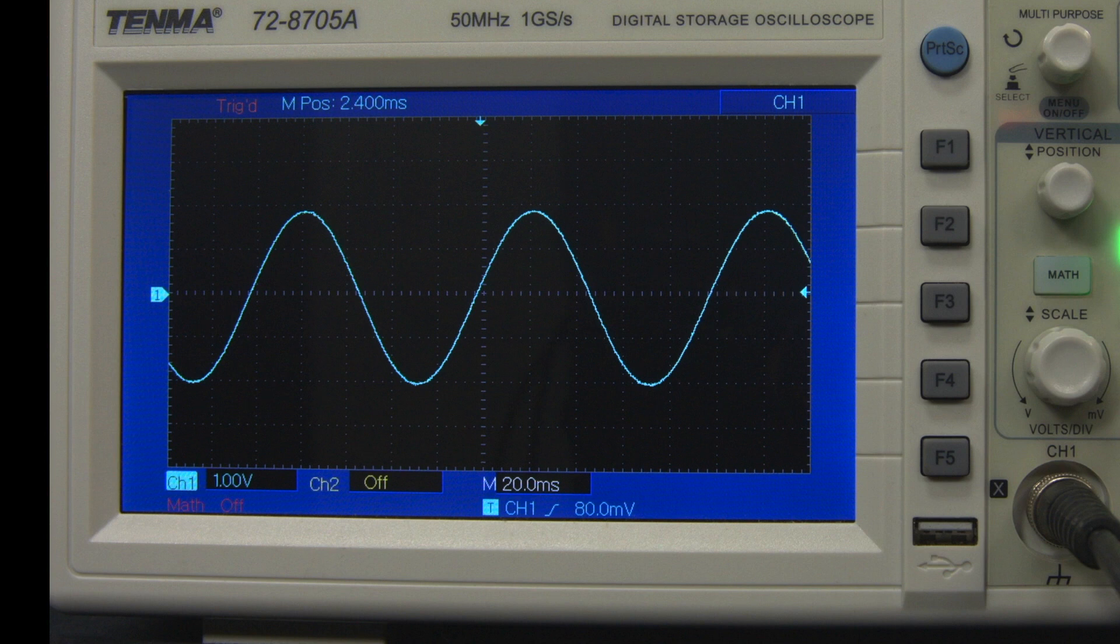The horizontal axis shows time. The main use of the oscilloscope is to show voltage as a function of time. The time scale or time base as it is called is shown next to the M at the bottom of the screen. In this case it is 20 milliseconds per division. From one voltage peak to the next is five divisions here, giving a period of this signal to be five times 20 milliseconds, which is 100 milliseconds for a period. This is a frequency of 10 hertz.